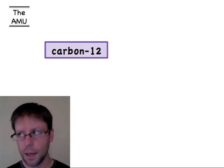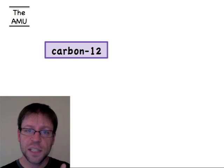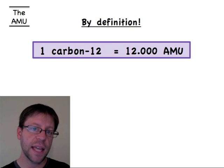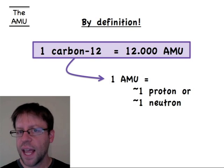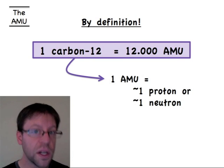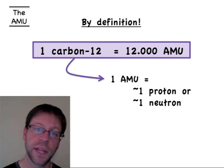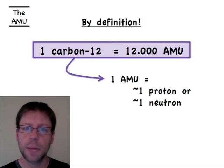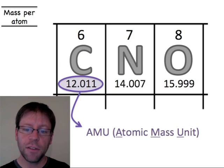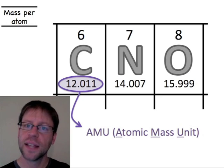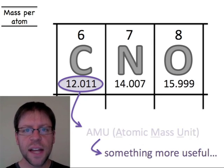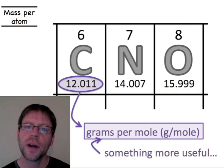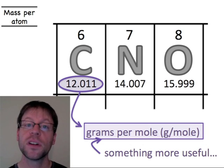The AMU is based on something very particular. We start with carbon-12 as the special reference atom — it has six protons and six neutrons. By definition, one carbon-12 atom has an AMU of exactly 12. This means an AMU is approximately equivalent to one proton or one neutron. That's a useful unit for conceptualizing atoms, but it's not particularly useful in the laboratory where scales measure in grams. If we're clever, we can define an AMU as a gram per mole — but to understand that, you first need to know what a mole is.